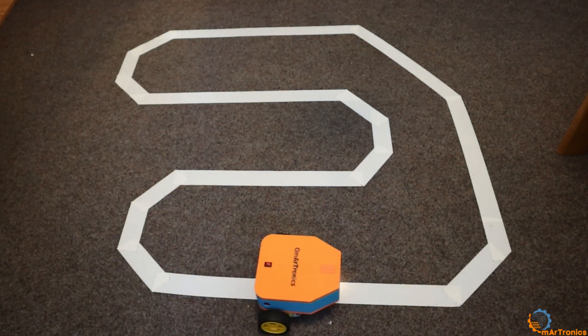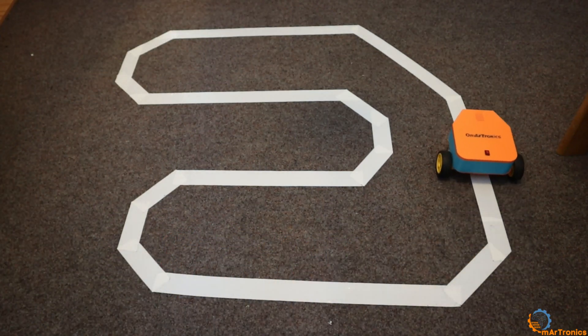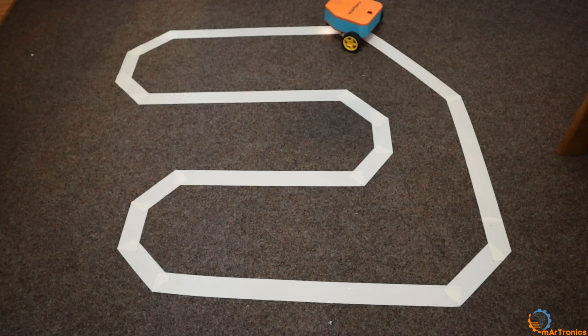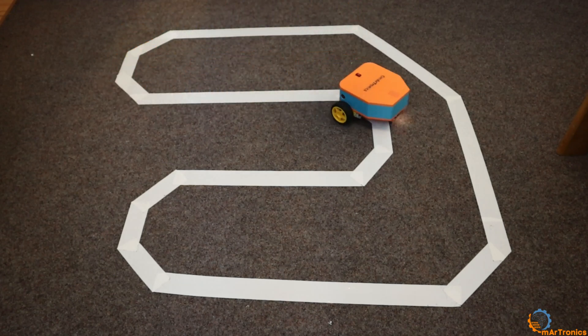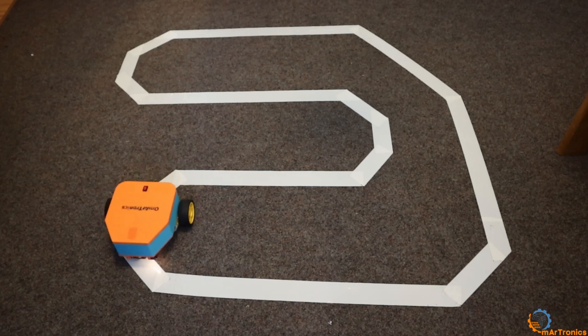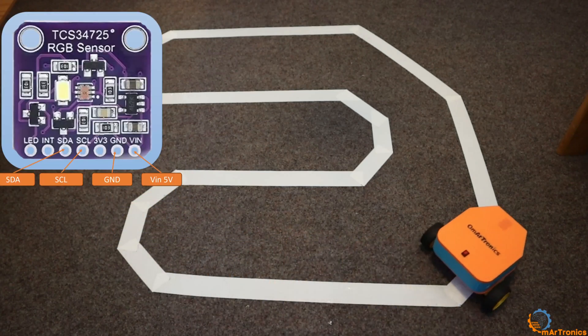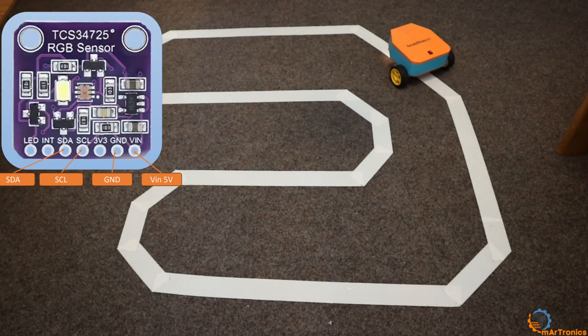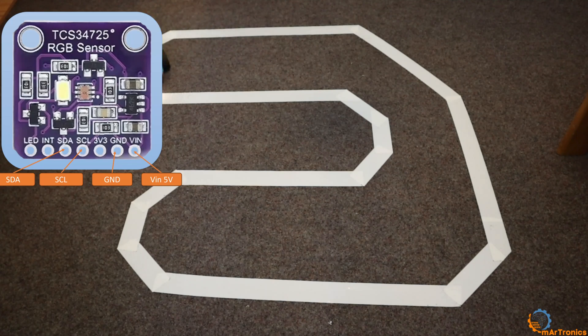Welcome to this new video in which we will cover the second part of the educational project, building a mobile robot that follows the line. In this video, we will learn how to use the TCS34725 color sensor to sense surface color and program the mobile robot to follow a white line on dark ground.